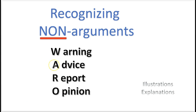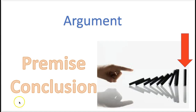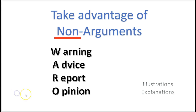Remember WAR-O: warning, advice, report, or opinion is not an argument. An argument contains a premise and a conclusion — someone is trying to prove something to you; they're not just giving their opinion or advice, but they want to prove a point. Now here's something good to know about non-arguments: we can take advantage of them. Because if you're a person who does not want to be proven wrong, and you have somebody who will scrutinize what you write or say, you can get in the habit of just giving your warning, advice, report, or opinion until you purposely present an argument. That way, you cannot be proven wrong.